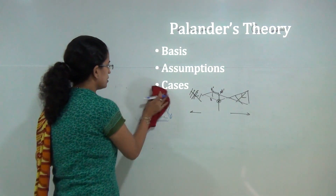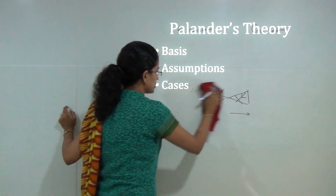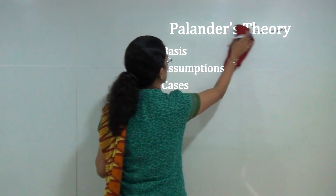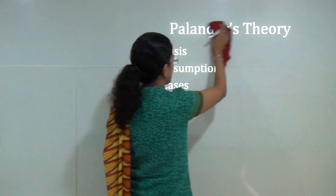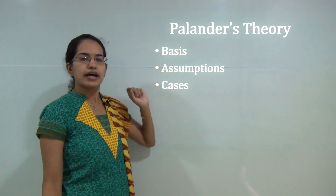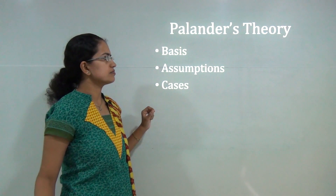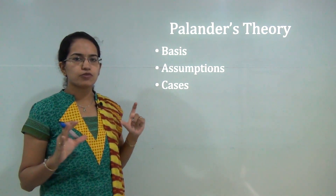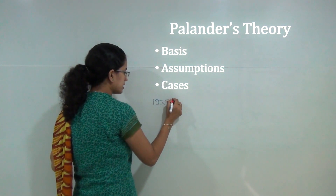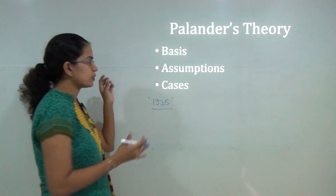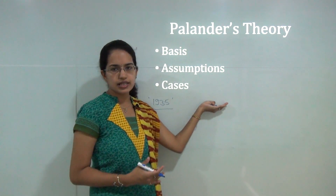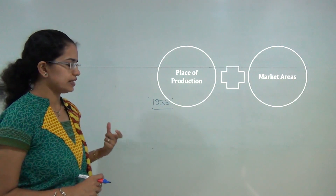The next theory propounded was Plander's theory. Plander's theory was much more accepted by economists based on its higher applicability. This theory basically talked about a market area approach, and the basic focus was the market area. He propounded the theory in 1935. When understanding this theory, we will use the same heads: the basis, the assumptions, and the cases.